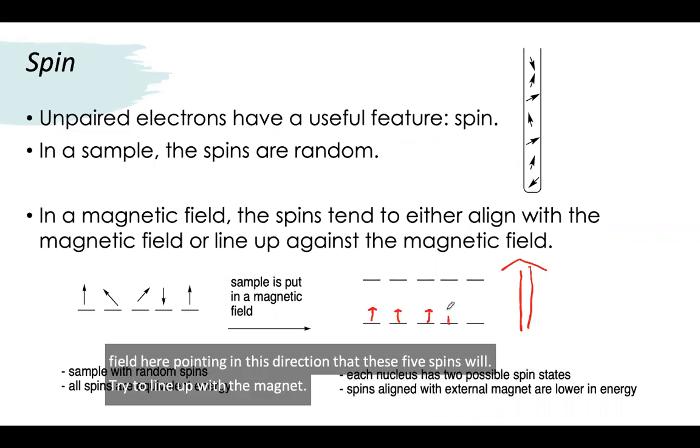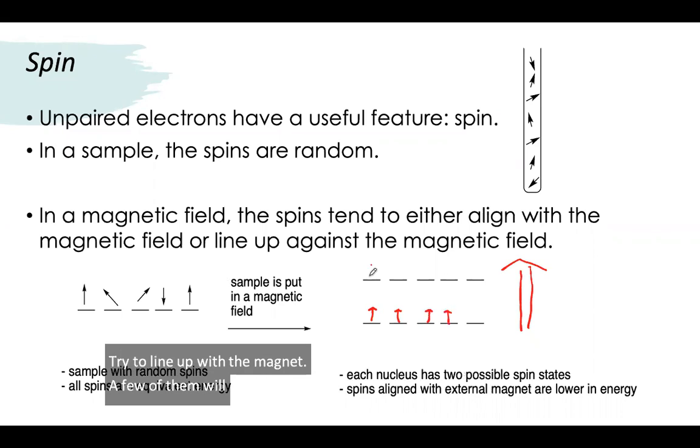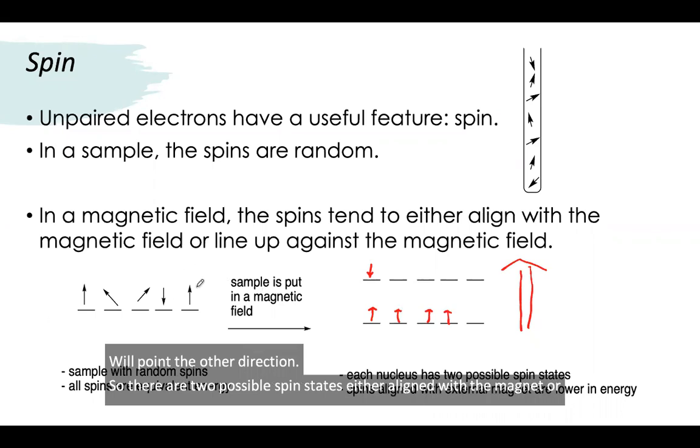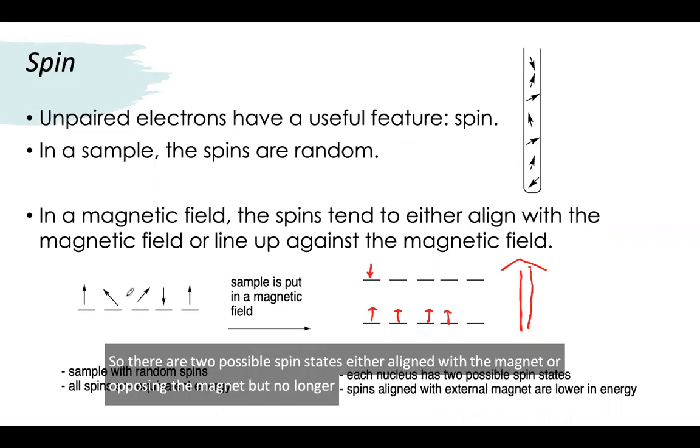A few of them will point the other direction. So there are two possible spin states: either aligned with the magnet or opposing the magnet, but no longer random pointing in a variety of directions.